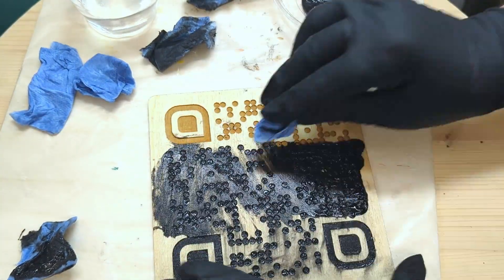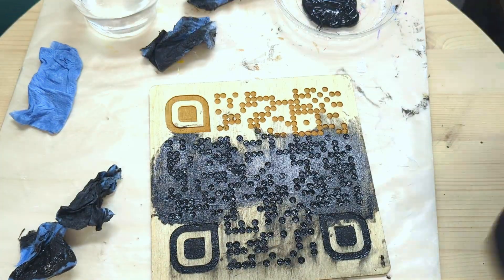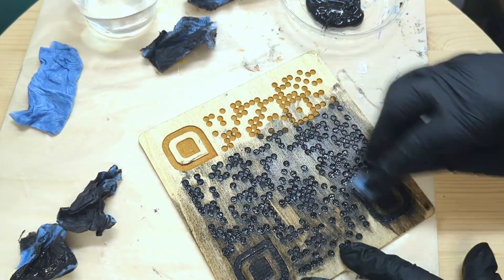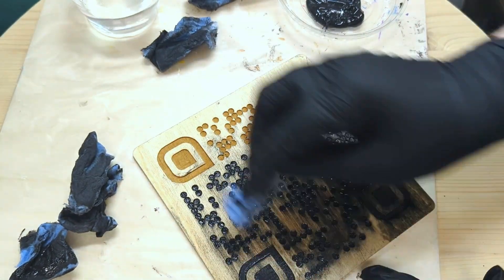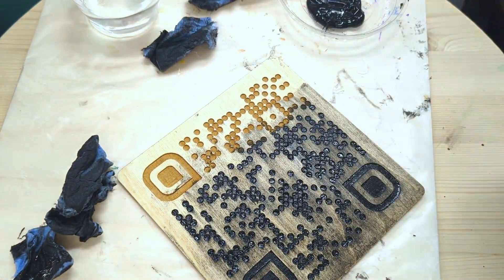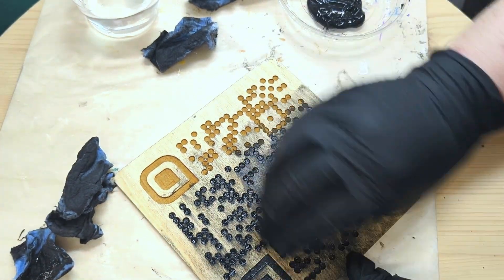Once done, you can touch up the areas that you might have missed or accidentally wiped out of the engraving area. The paint must be 100% dry before you sand it, otherwise the dust is going to stick to that paint.